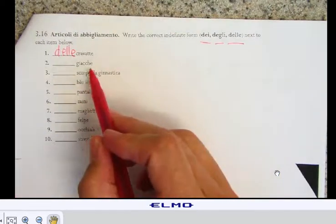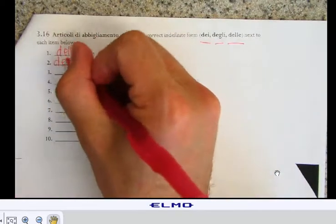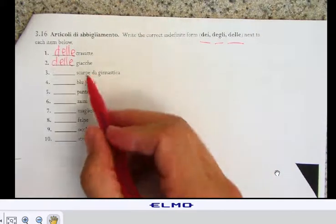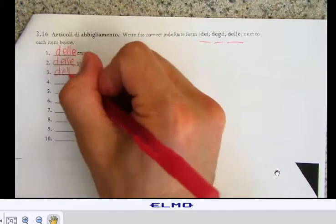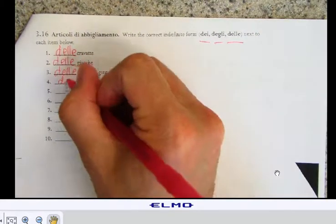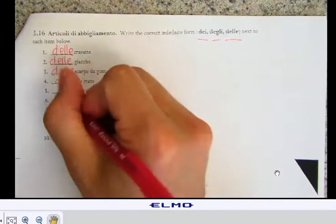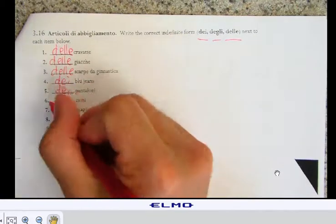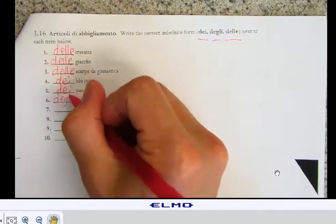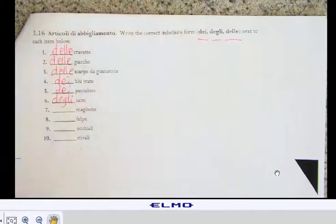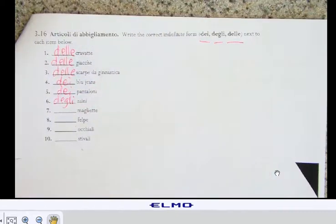Feminine plural. Ghiacce, jackets, dele again. Scarpe, dele again. Blue jeans, masculine plural. Pants, masculine plural. Backpacks, masculine plural with a noun that begins in a Z. So, that's dei.